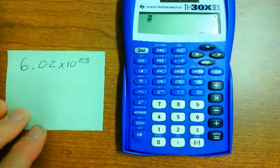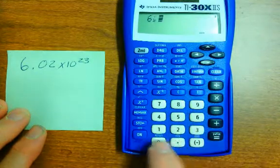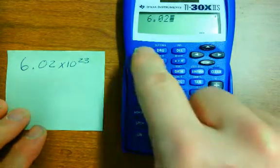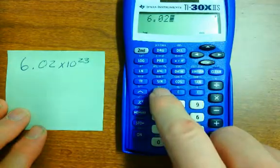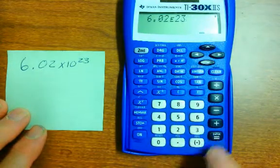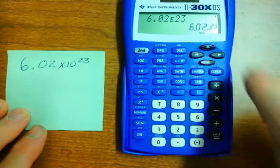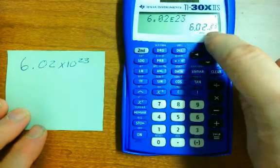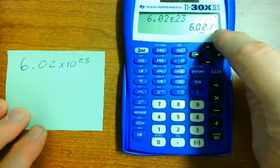On the calculator, you would write 6.02, and then hit the second button, and then this button. It has a little EE on it, to the 23rd. If you hit equals, you can actually see it written as the little tiny times 10 to the 23rd.